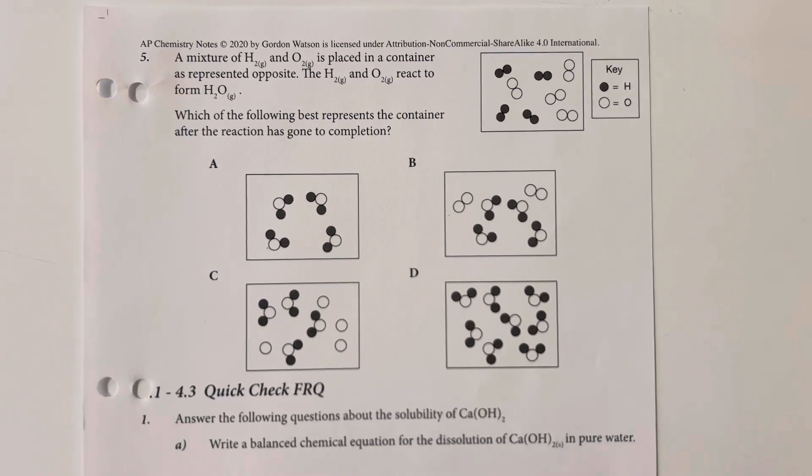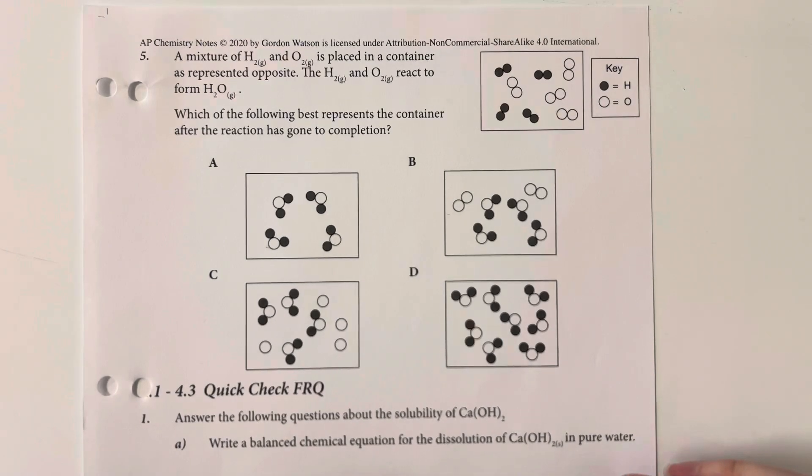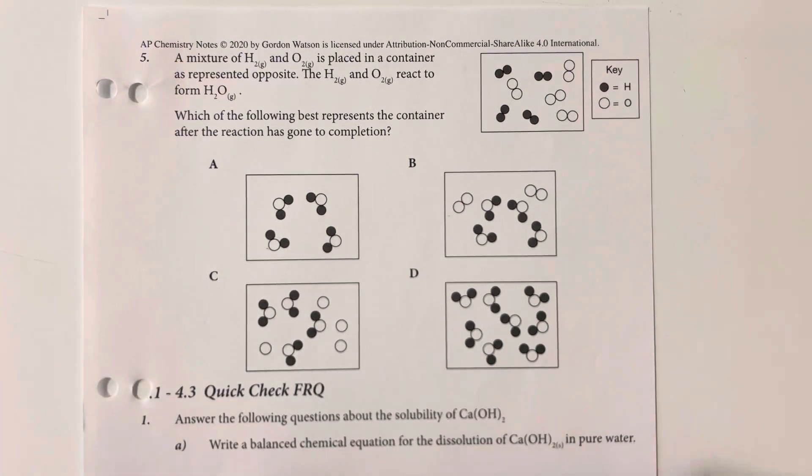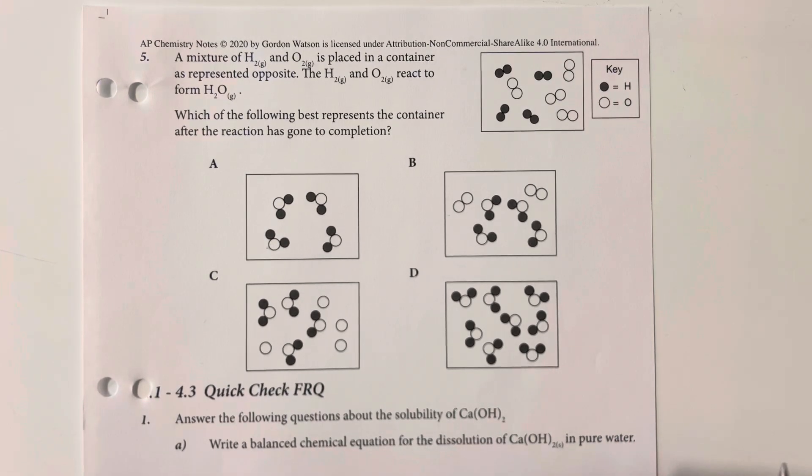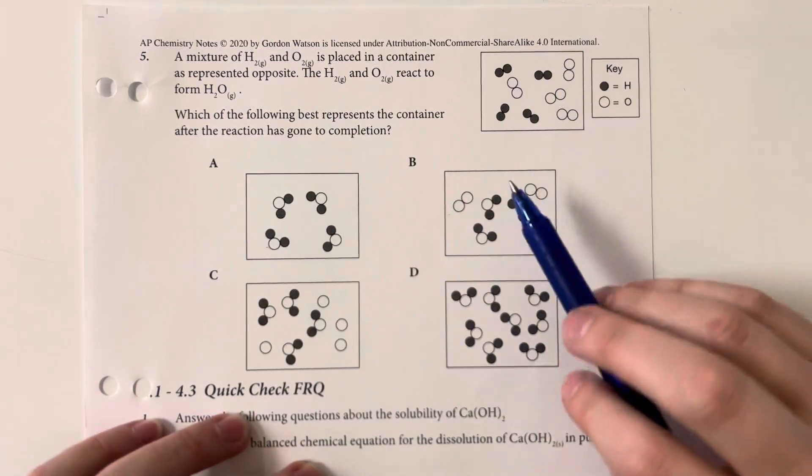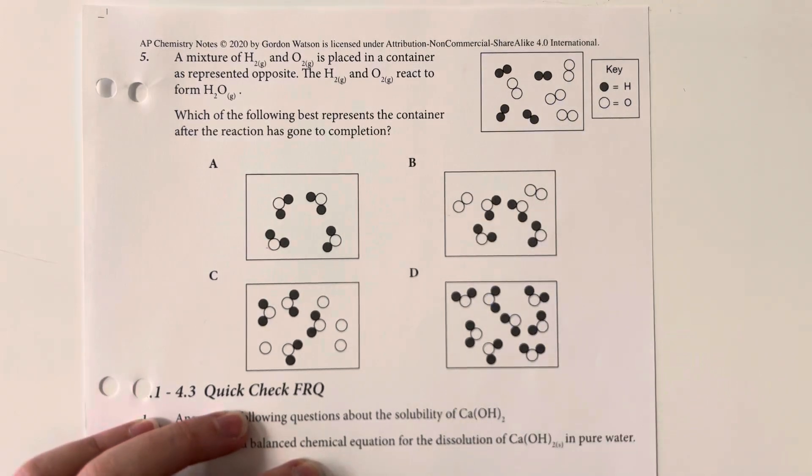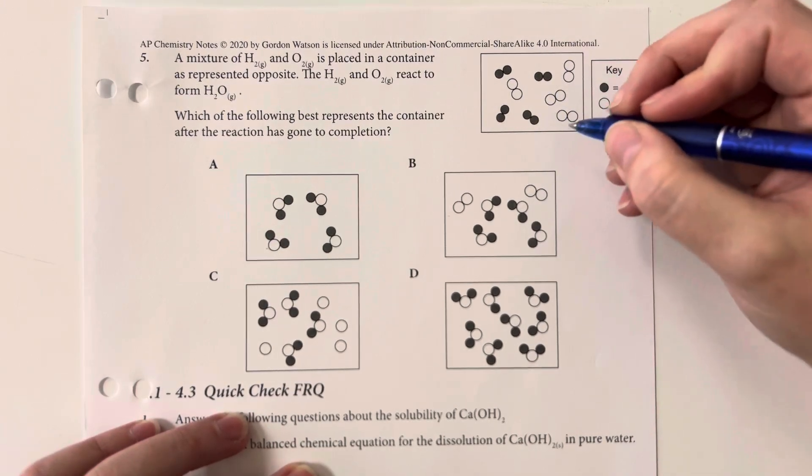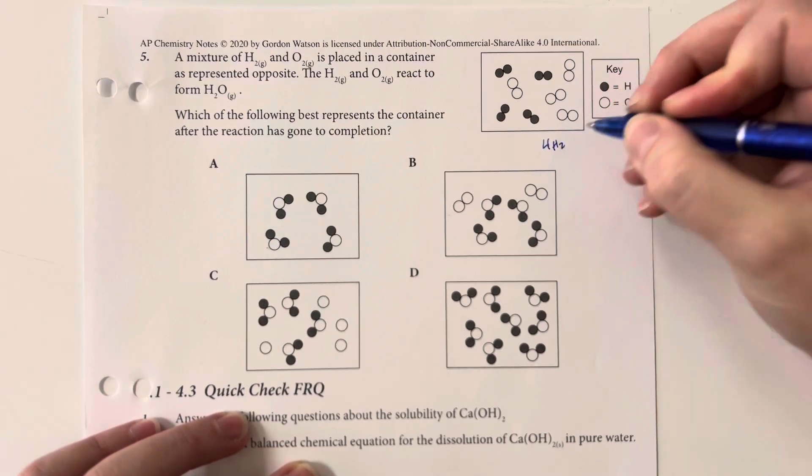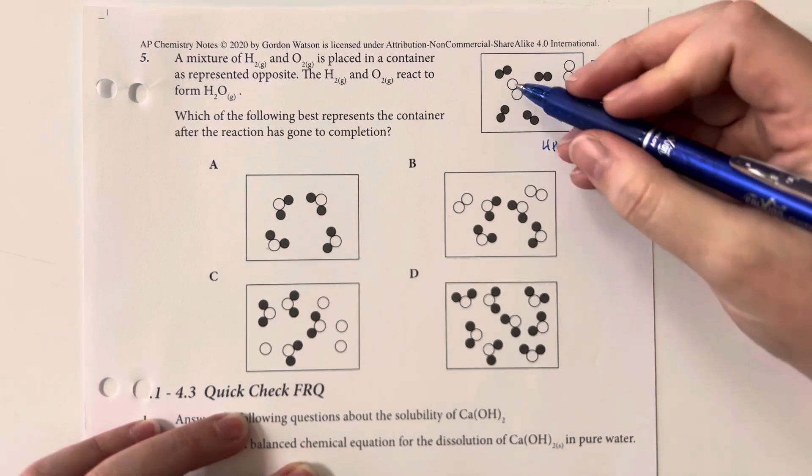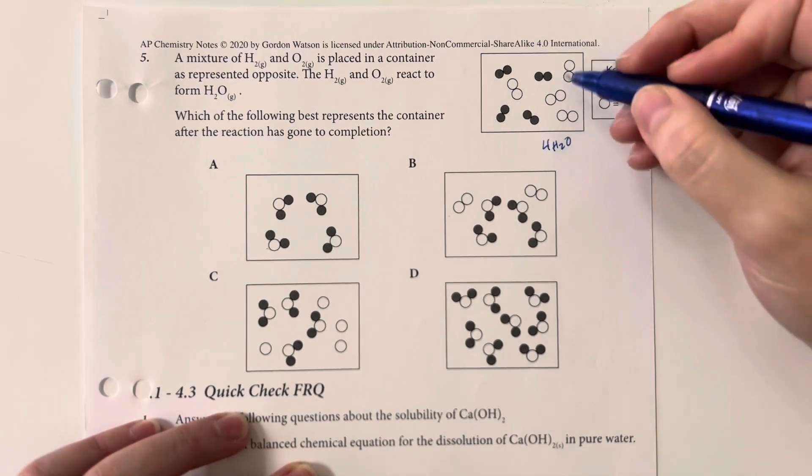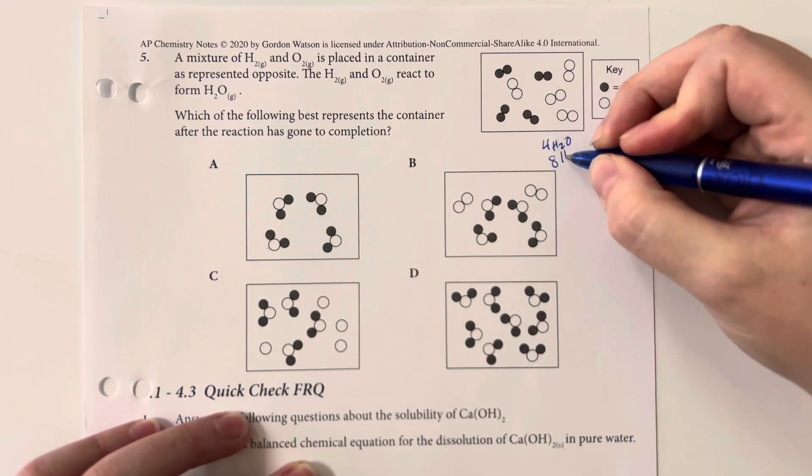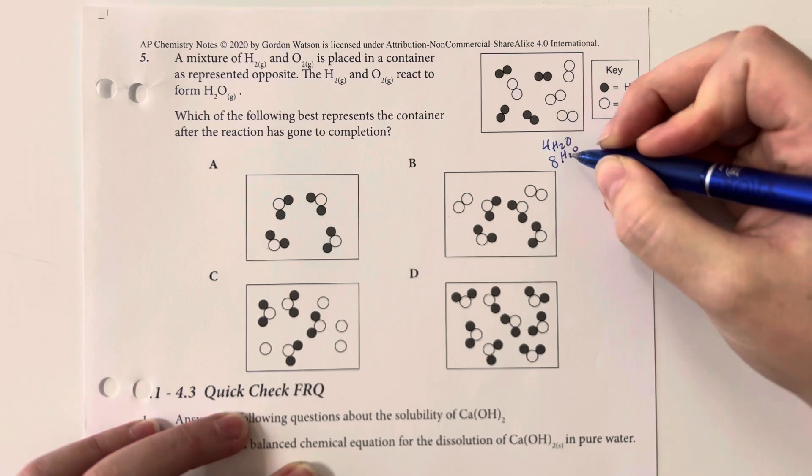A mixture of hydrogen gas and oxygen gas is placed in a container as represented opposite. The hydrogen and oxygen react to form water. Which of the following best represents the container after the reaction has gone to completion? So I am looking at my limiting reagents here. I have eight total hydrogens, which means that I can form four waters, and I have also eight total oxygens, which would mean that I could form eight waters from the amount of oxygen.